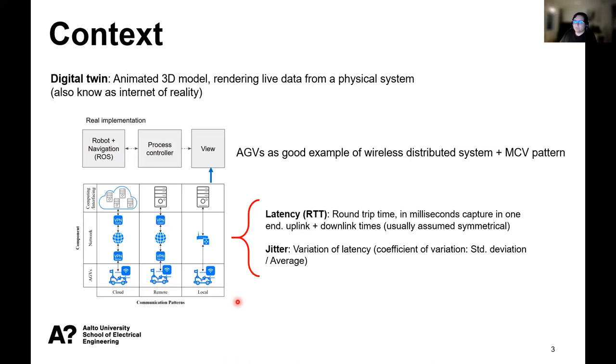In our work, we have three major components: an AGV, which is the machine that we are using as a physical system, computing or interfacing processing units that can be the cloud or servers on premise, and a network component that links those two ends of our system.